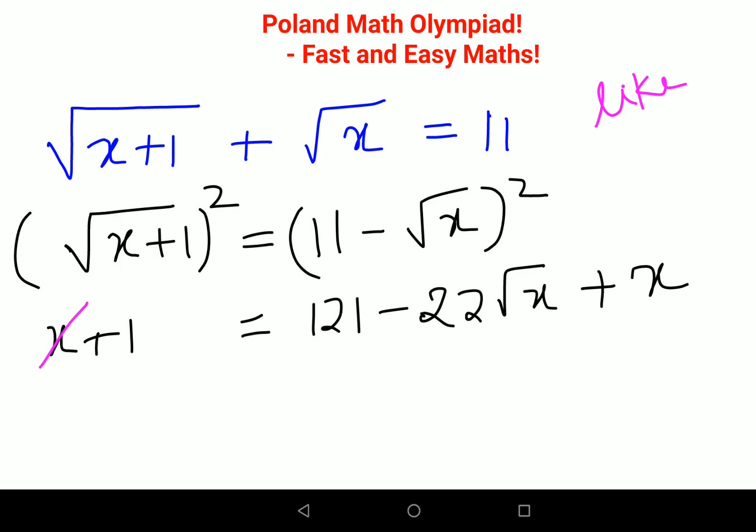Now here we can say this is positive x and this is also positive x, so we will cancel both of them. And we will shift the number on one side and the x on the other side.